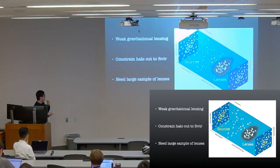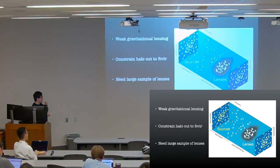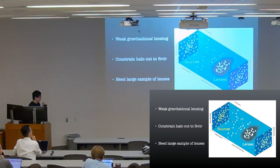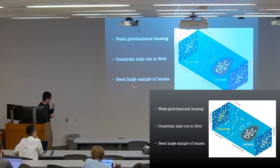Alternatively, there's a very powerful technique called weak gravitational lensing or galaxy-galaxy lensing. Basically, we measure the distortion of the background source galaxies to infer the halo profile, the dynamical mass of the foreground lenses, in our case, the dwarf galaxies. This technique is really powerful. It can constrain the halo profile, halo mass out to the virial radius or even larger than that. But the thing is, you need to get a really large sample of lenses to get a decent lensing signal-to-noise to constrain your models.